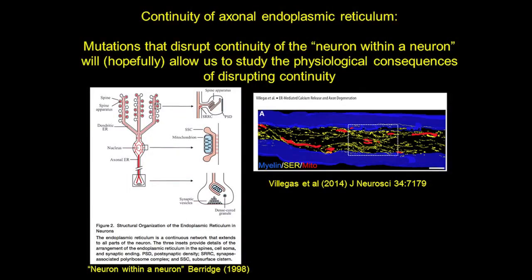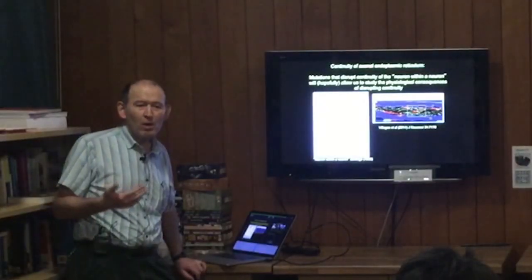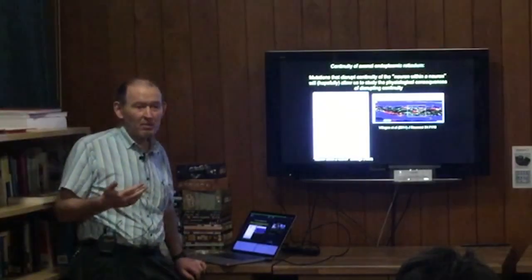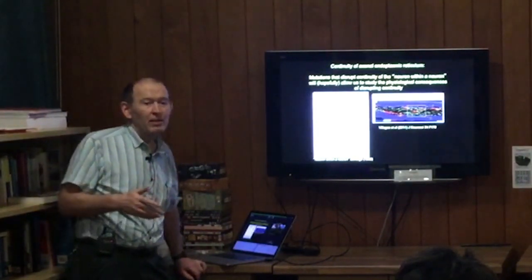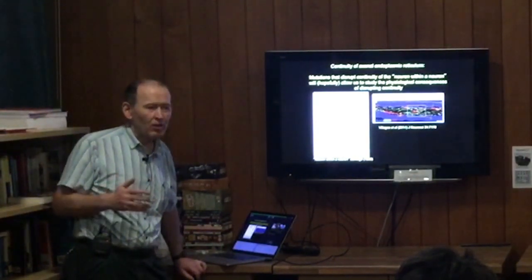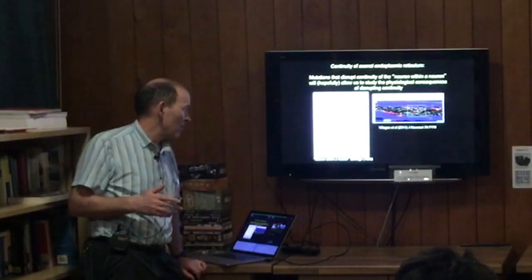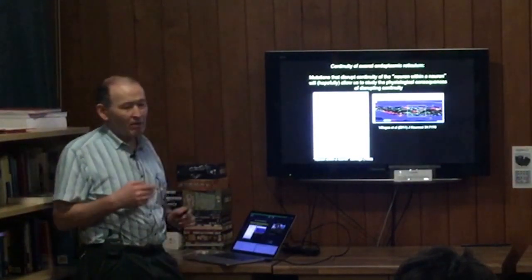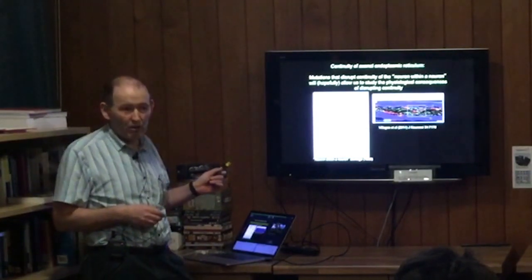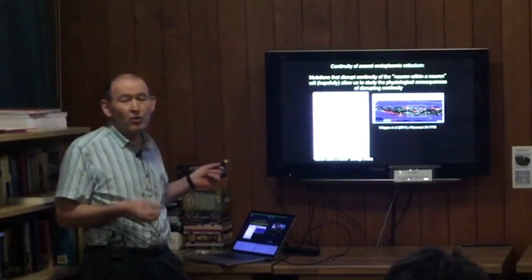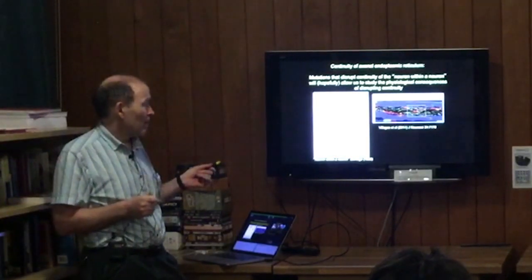Looking a little bit into the future: finding out that these genes affect axonal endoplasmic reticulum is again only the next step, because it doesn't tell you why the axons are degenerating and what's going wrong with them. However, the fact that we do have mutations now that are disrupting the continuity means we now have a tool. It would be easier if we had additional mutations where we could see the effect in more axons, but in principle we can make flies where we see discontinuities in this network within the axon and start to study the physiology — is it calcium signaling? Oxidative phosphorylation? Lipid signaling or biosynthesis?